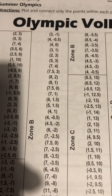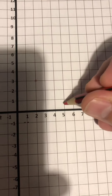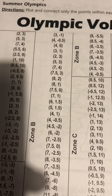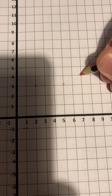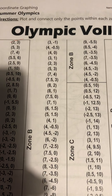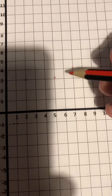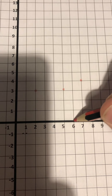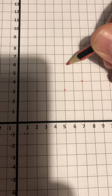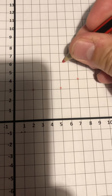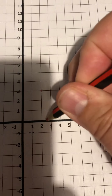Then (5, 3): across to 5, up to 3 — that's my second one. Then (7, 4): across to 7, up to 4. And I've got (5.5, 6) — this time I go across to 5.5, which is in the middle of 5 and 6, so 5.5 goes there.